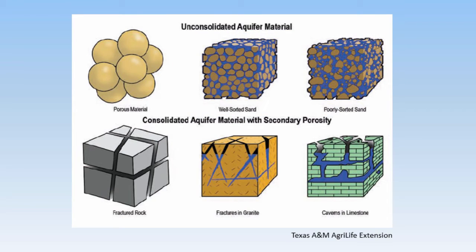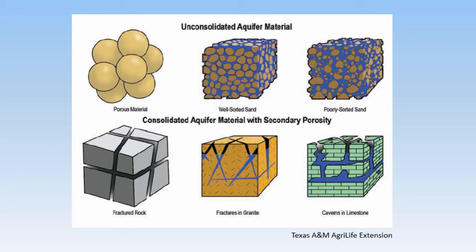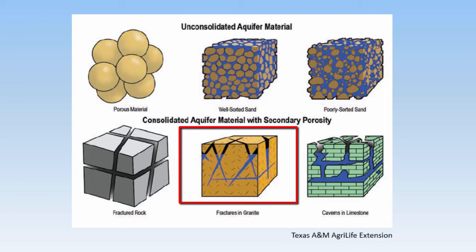Clay is an aquitard because it's hard for water to move through it, which we will discuss in a minute. Bedrock can be highly fractured and creviced so that overall it has enough void space to be an aquifer, or it can be almost solid throughout with a porosity of only a few percent. If your well is in a geologic unit with low porosity, you might have limited water availability.